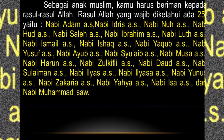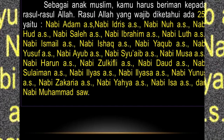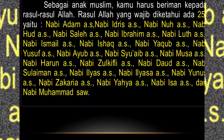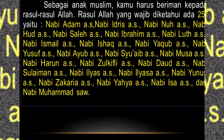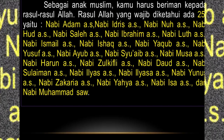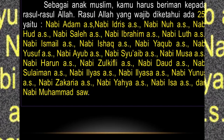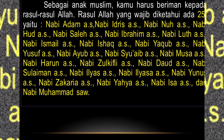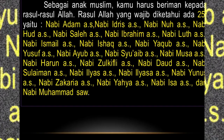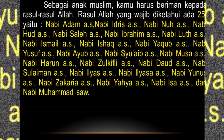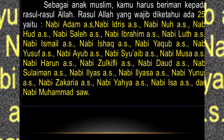Sebagai anak muslim, kamu harus beriman kepada Rasul-Rasul Allah. Rasul yang wajib kita ketahui ada 25, yaitu: Nabi Adam, Nabi Idris, Nabi Nuh, Nabi Hud, Nabi Saleh, Nabi Ibrahim, Nabi Lut, Nabi Ismail, Nabi Ishaq, Nabi Yaqub, Nabi Yusuf, Nabi Ayyub, Nabi Syu'aib, Nabi Musa, Nabi Harun, Nabi Zulkifli, Nabi Daud, Nabi Sulaiman, Nabi Ilyas, Nabi Ilyasa, Nabi Yunus, Nabi Zakaria, Nabi Yahya, Nabi Isa, dan Nabi Muhammad sallallahu alaihi wasalam.